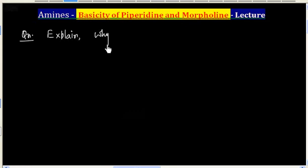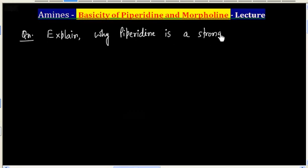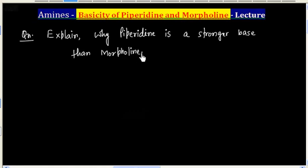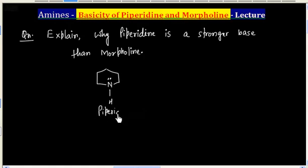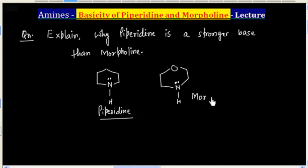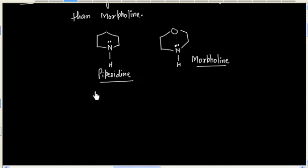Explain why piperidine is a stronger base than morpholine. This molecule is piperidine and this molecule is morpholine. So piperidine is more basic compared to morpholine.